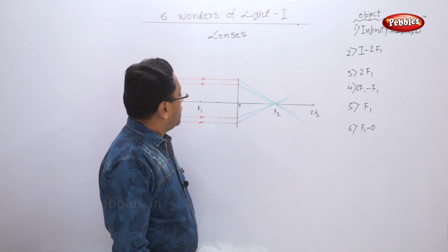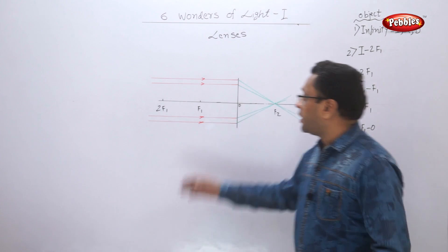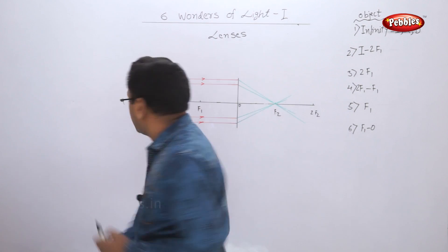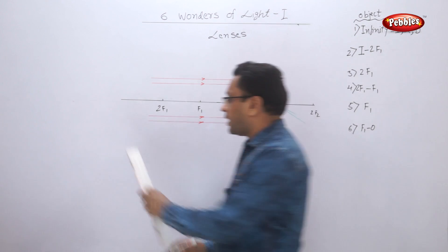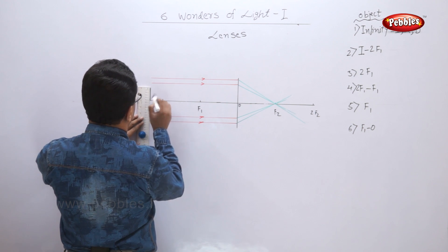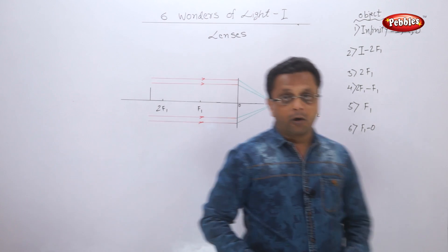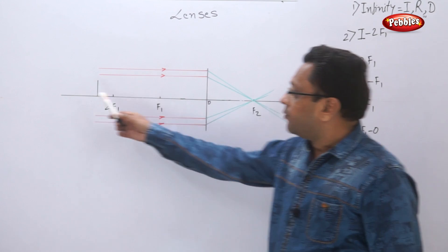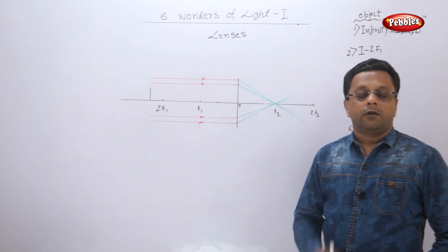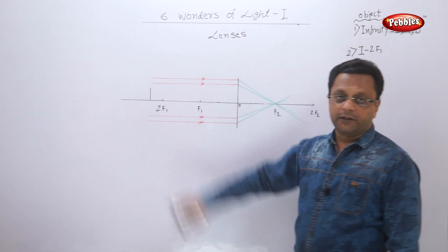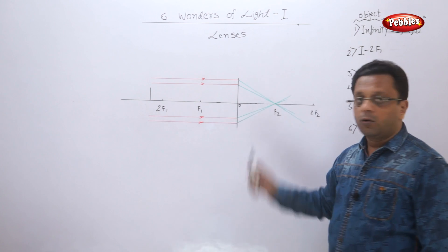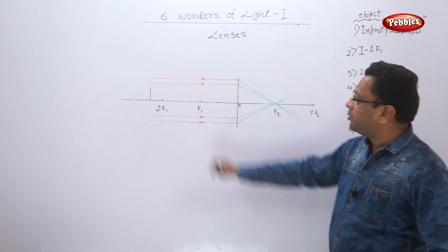Now let us see what happens if an object is kept between infinity and 2F1 — just outside 2F1. From the object, we draw two rays: one ray parallel to the principal axis, and one ray passing through the optical center, which will not deviate.